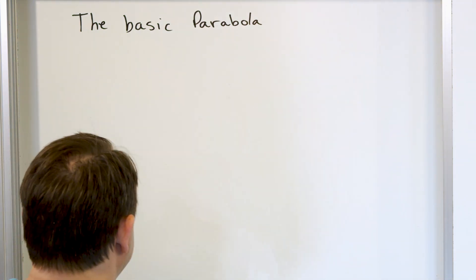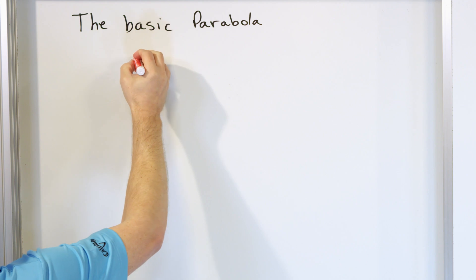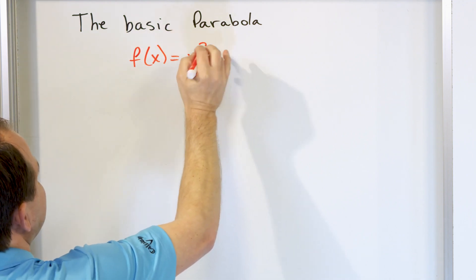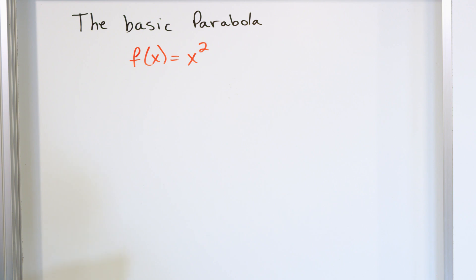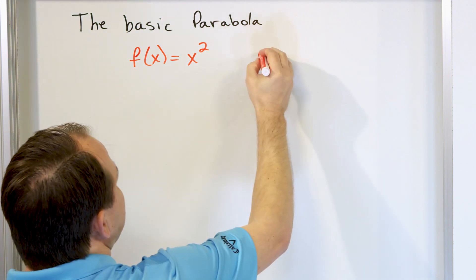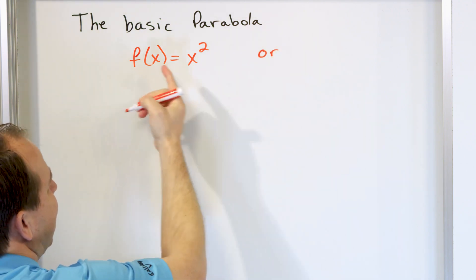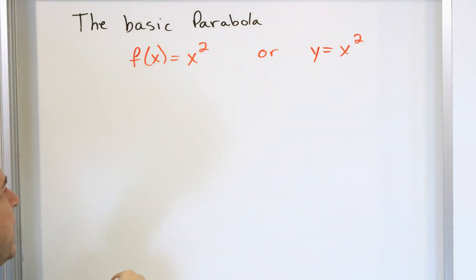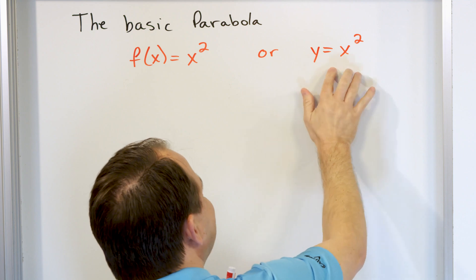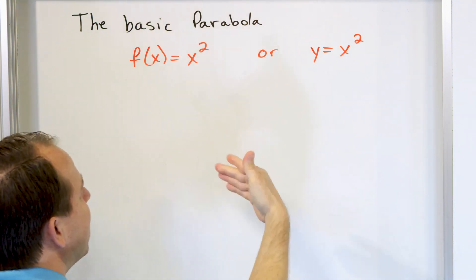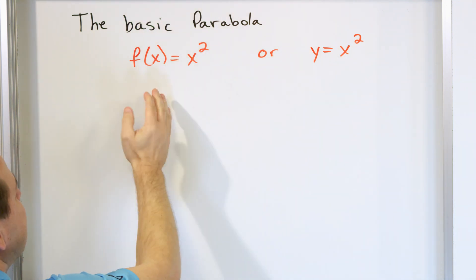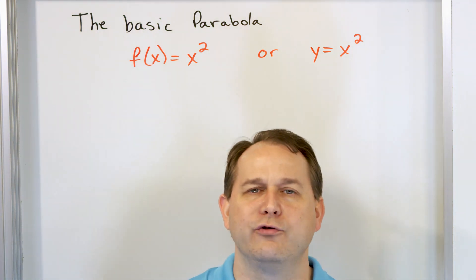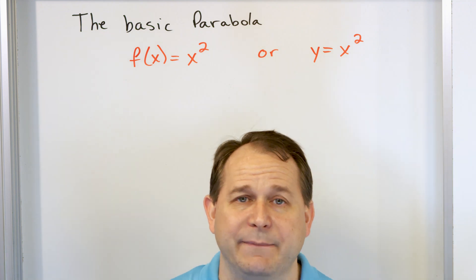You've already encountered this — we've talked about it many times before. The basic parabola is very simple: f(x) is equal to x squared. This is the most basic parabola you can get. If you don't want to think about functions, you can write it as y is equal to x squared. Usually when you start algebra you look at it as y equals x squared, and then later you replace the y with f(x). But these two representations are saying the same thing.